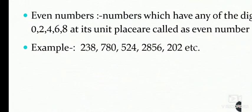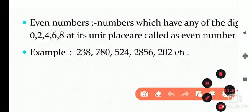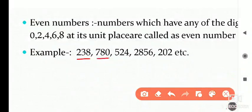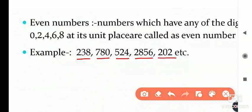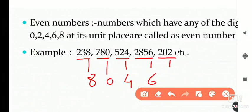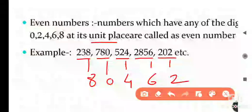For example, here are some numbers: 238, 780, 524, 2856, 202. If you see the unit place of each number — 8, 0, 4, 6, and 2 — all of these digits 0, 2, 4, 6, 8 are present at the unit place, so all these numbers are even numbers.